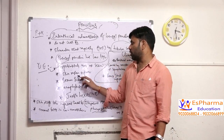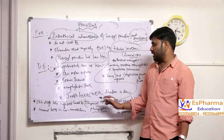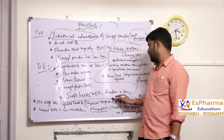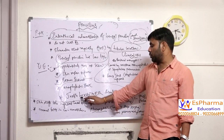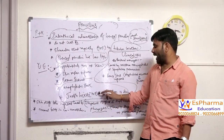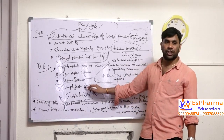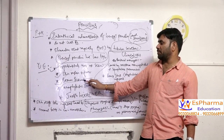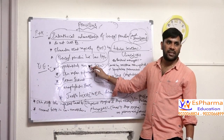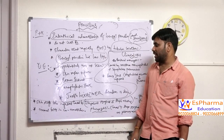Regarding unwanted effects, penicillin will have some hypersensitivity reactions, skin rashes, and fever. It causes hypersensitivity reactions, skin rash, fever, and serum sickness. Anaphylactic shock is seen with penicillin, and Jarisch-Herxheimer reaction is also seen with penicillin.